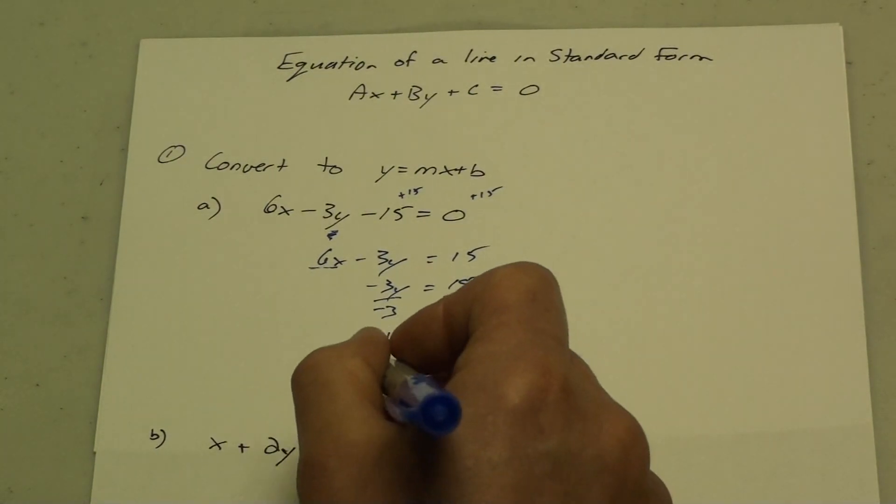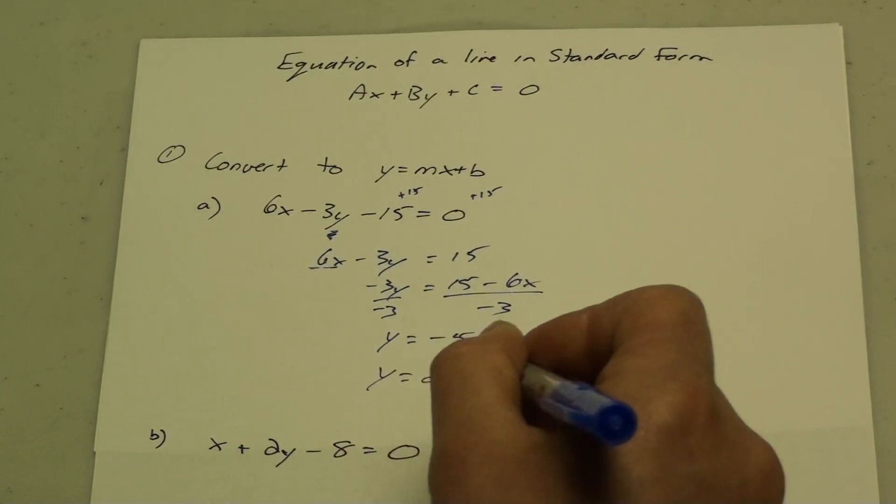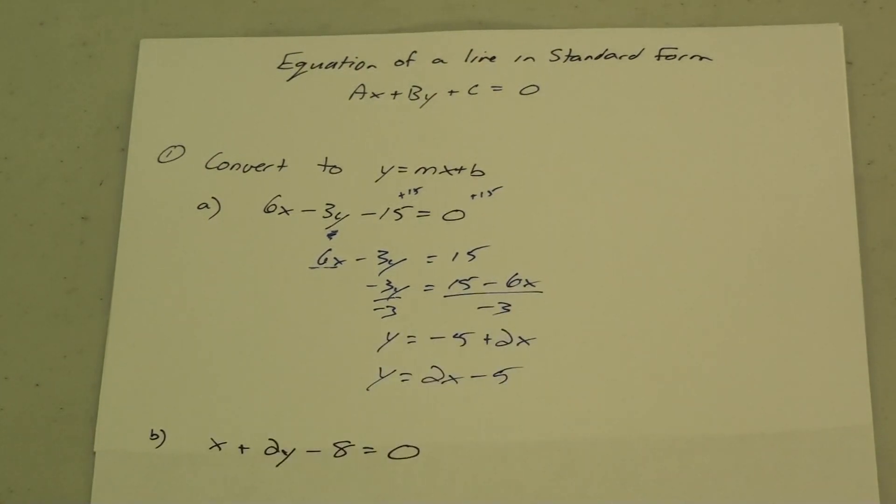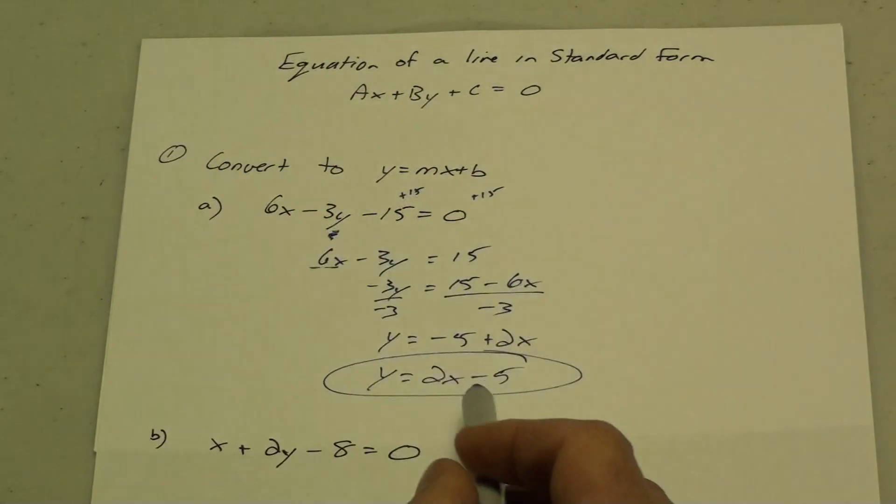Now I can rearrange it to get my slope, my mx first, and my b afterwards to get slope y-intercept form. So to go from standard form to slope y-intercept form, I need to get the y by itself.